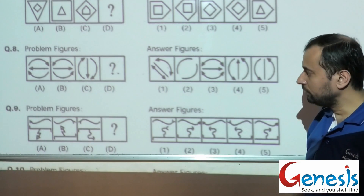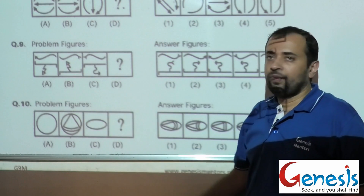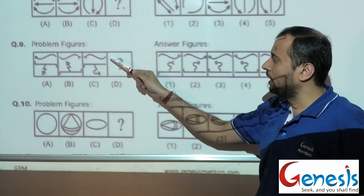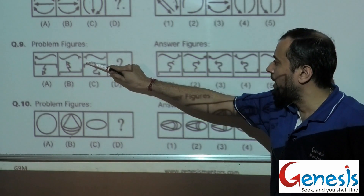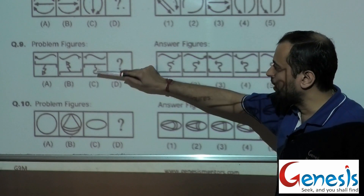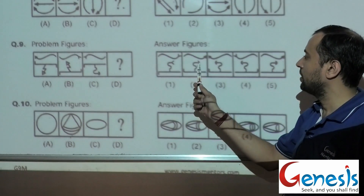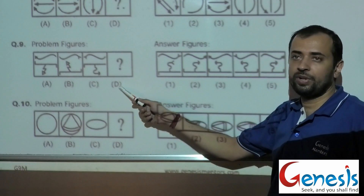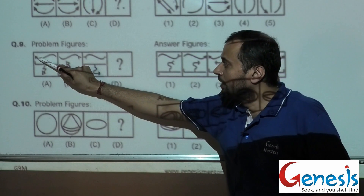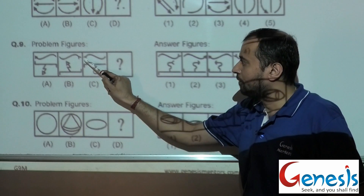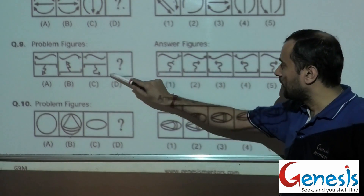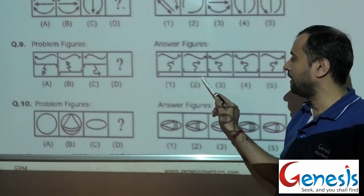Moving on to the ninth problem: again the first thing is that this figure's water image is being taken. Here also the water image of this figure would be taken, and the water image would make this line point up, pointing in this direction. So the correct answer is frame number 2. If frame number 2 is replaced in D, we get the correct answer because the water image is being taken. Also, the arrow changes from outward to inward — so from inward it should become outward. Frame number 2 satisfies all these logics.